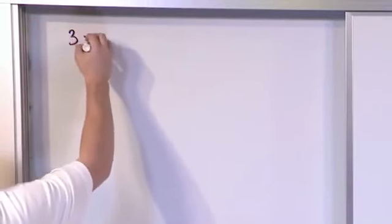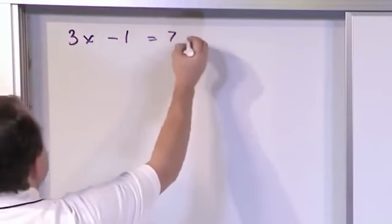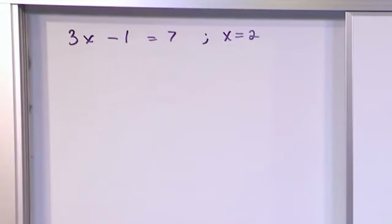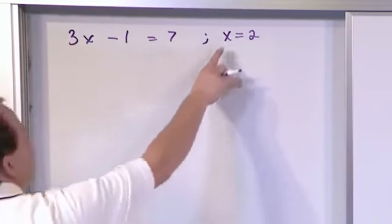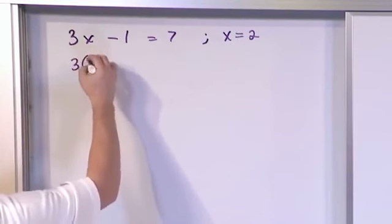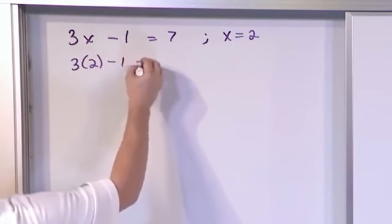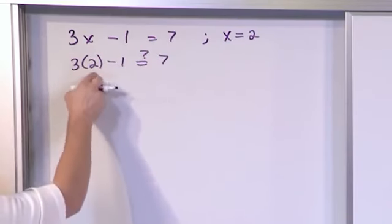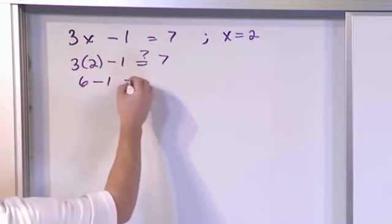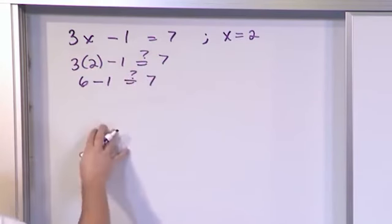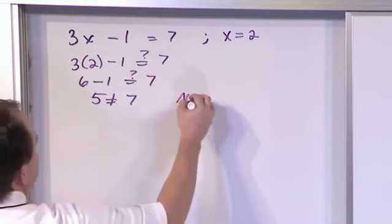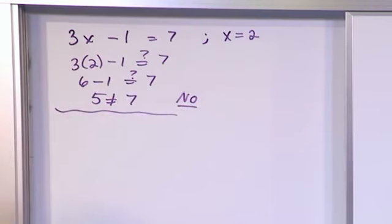Let's do another one. 3 times x minus 1 is equal to 7, and let's say that x is equal to 2. Is this a valid solution to this equation? So we stick x in here and we'll get 3 times x is equal to 2 minus 1 equals with a question mark 7. 3 times 2, we have to do this first because this is multiplication. We get 6. We still have to subtract the 1 like this. 6 minus 1 is 5, which as you know is not equal to 7. So no, this is not the solution to this equation because 5, when you plug it in, you don't get the answer you expect.